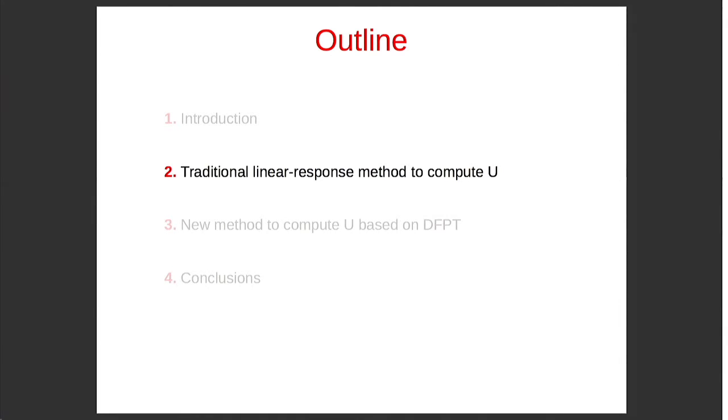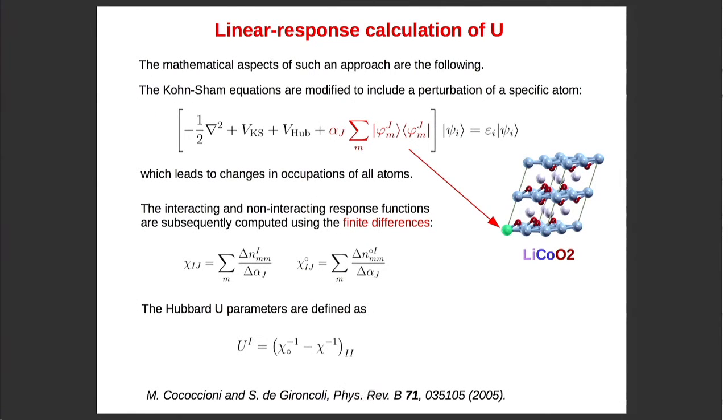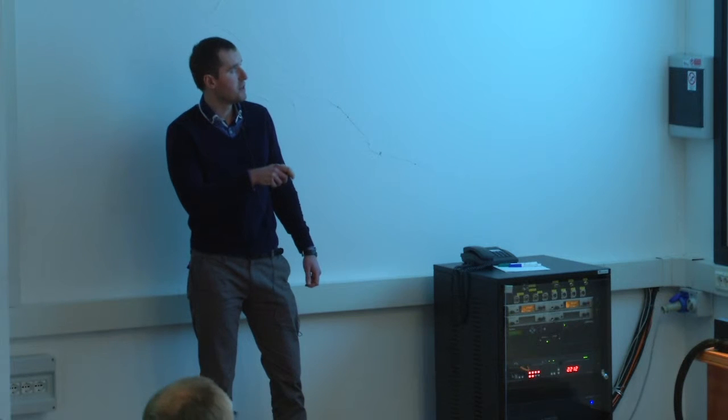Very briefly, what this method is about. We have to solve the modified Kohn-Sham equation where we have, I highlight in red color, this is kind of a penalty function, where alpha is the strength of the perturbation, and this is the summation over the localized orbitals. Essentially, this is a projector on the manifold of localized states for a specific atom J.